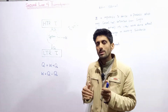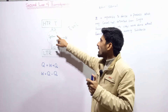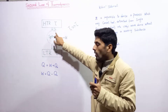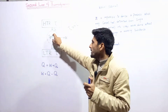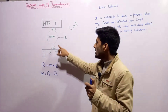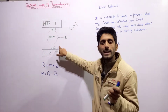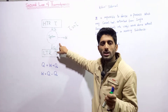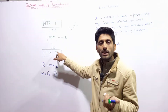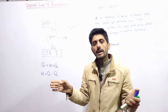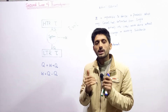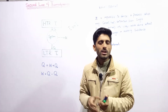A heat engine absorbs Q1 heat from a high temperature reservoir. Some part of that absorbed heat is converted into useful work done. The remaining heat is expelled by the system toward the sink — toward the cold or low temperature reservoir.